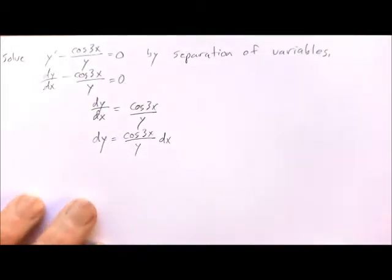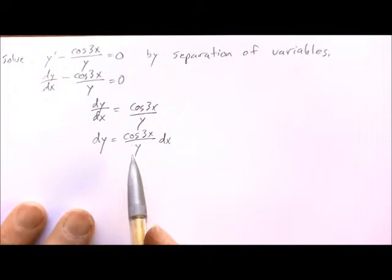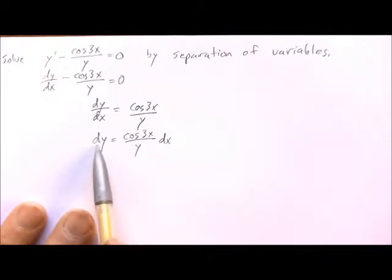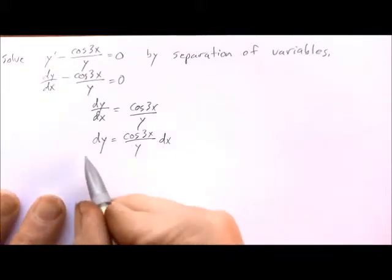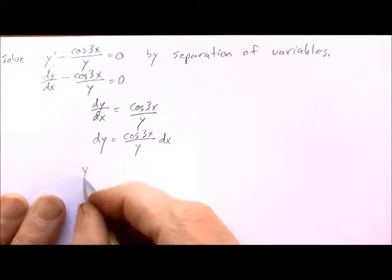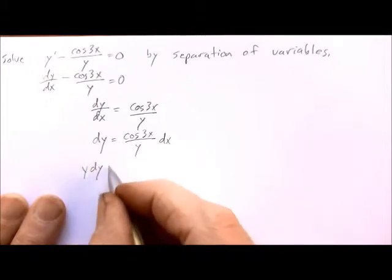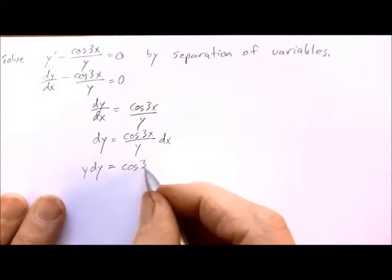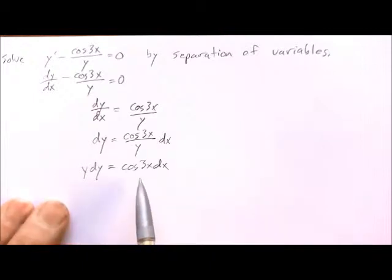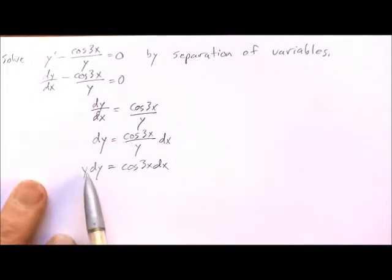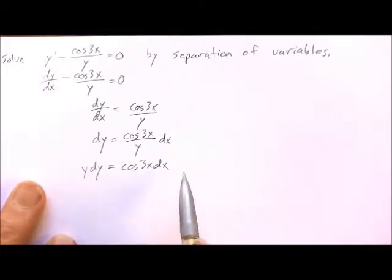Now our objective is to get everything containing a y on the left along with this dy, and everything containing x on the right along with the dx. So you can see at this point all we have to do is multiply by y on both sides and we have y dy equals cosine 3x dx. And now we've got the variables separated. We just have a y with our dy and a function of x with the dx.